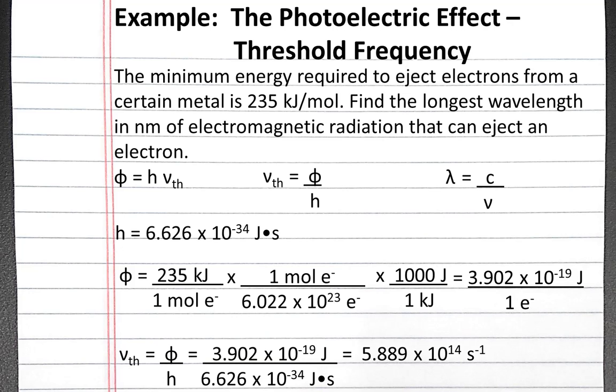We can plug these numbers in to the equation above to solve for the threshold frequency. And we should get 5.889 times 10 to the 14th, 1 over seconds or hertz.